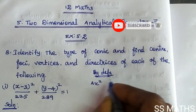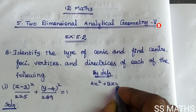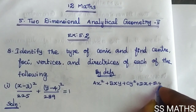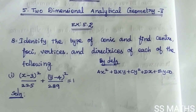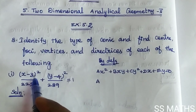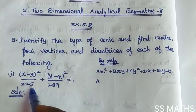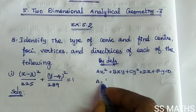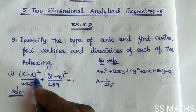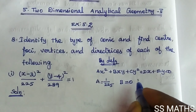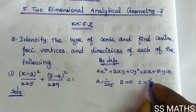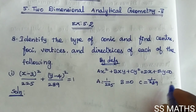By definition: ax² + bxy + cy² + dx + ey = 0. The x² coefficient is a. From the given question, the x² coefficient is 1/225, so a = 1/225. The xy term is not present, so b = 0. The y² coefficient is 1/289, so c = 1/289.